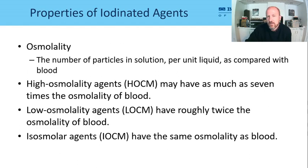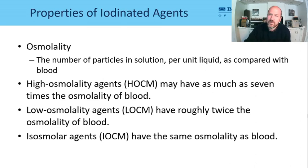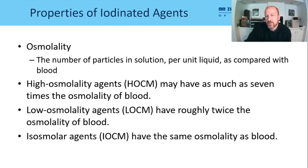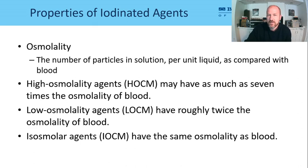Properties to consider when injecting these agents: number one is osmolality — the number of particles in solution. We have HOCMs (high osmolality contrast media) with about seven times the osmolality of blood, versus LOCMs (low osmolality), which is what we primarily use, at roughly twice the osmolality of blood. Isoosmolar simply means the same osmolality as blood.